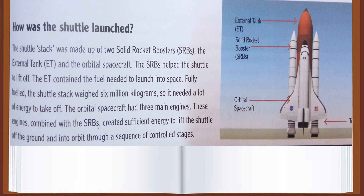Now let's start with the fourth paragraph: how was the shuttle launched? In this paragraph, I will give you the main parts of the shuttle stack. The shuttle stack was made up of two solid rocket boosters (SRBs), the external tank (ET), and the orbital spacecraft. The SRBs help the shuttle to lift off. The ET contained the fuel needed to launch into space. Fully fueled, the shuttle stack weighed six million kilograms, so it needed a lot of energy to take off.